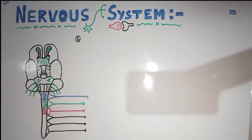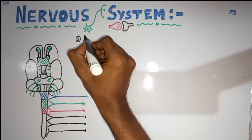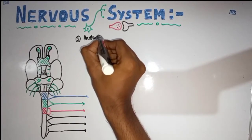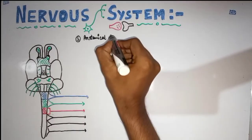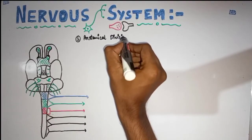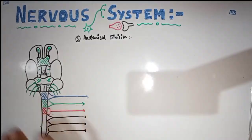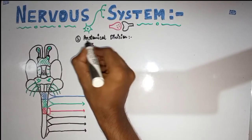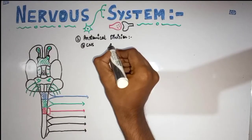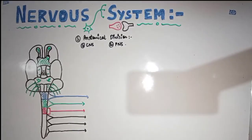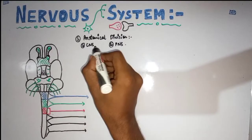From now on I will discuss every detail of the nervous system divisions. The first criteria is the anatomical division. Anatomically, the nervous system is divided into the central nervous system and the peripheral nervous system, PNS.